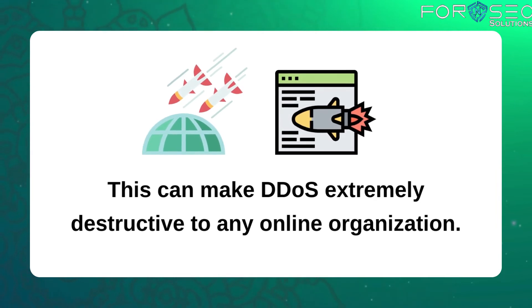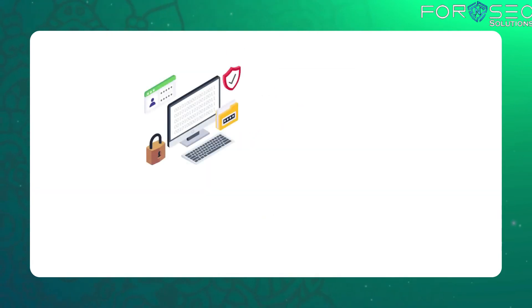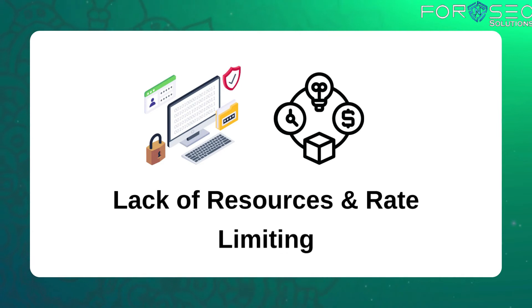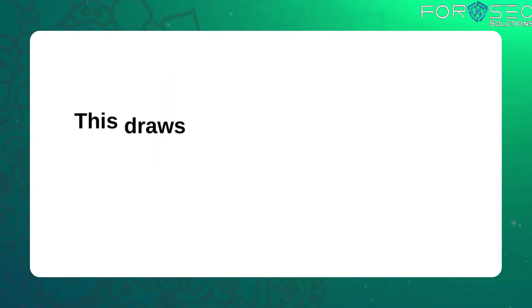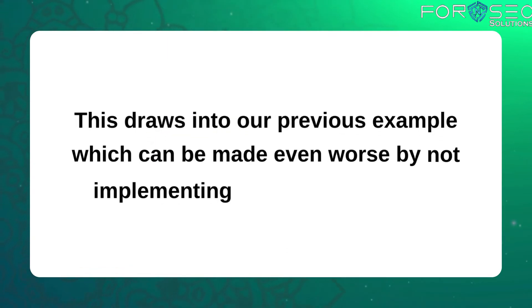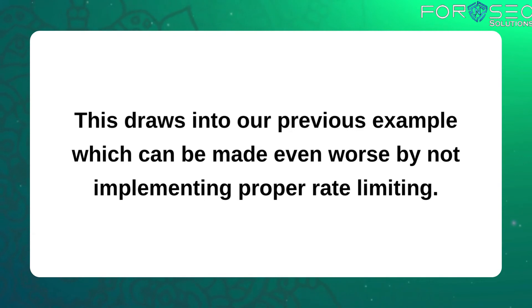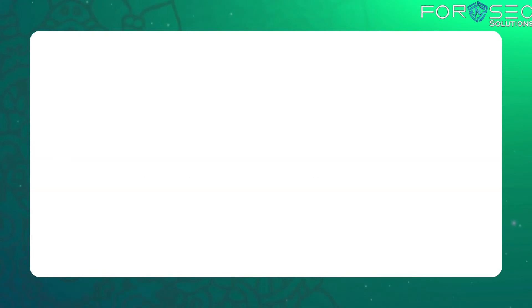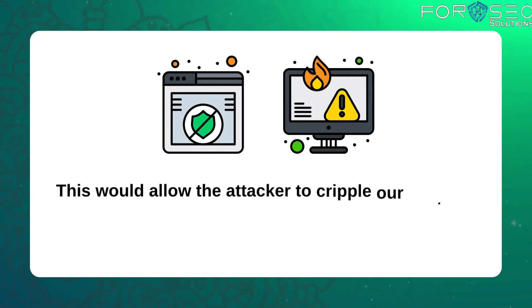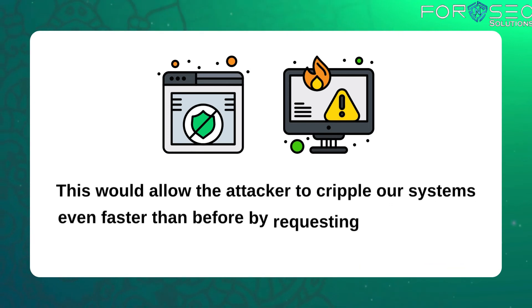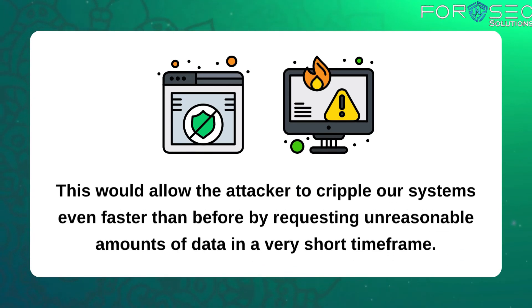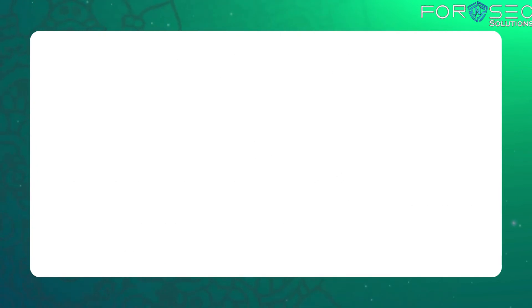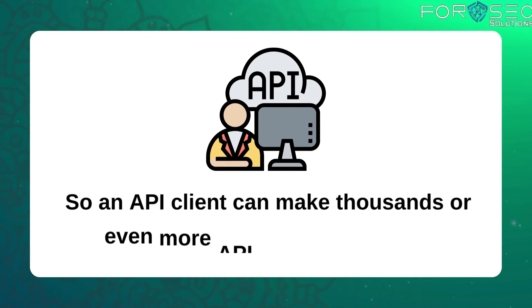The fourth is lack of resources and rate limiting. This builds on our previous example and can be made even worse by not implementing proper rate limiting. This would allow the attacker to cripple a system even faster than before by requesting an unreasonable amount of data in a very short time frame.